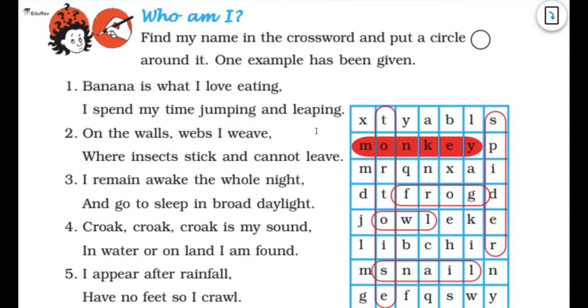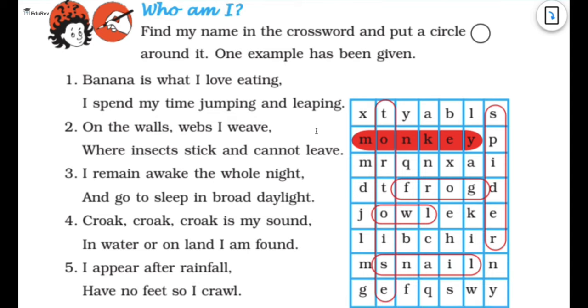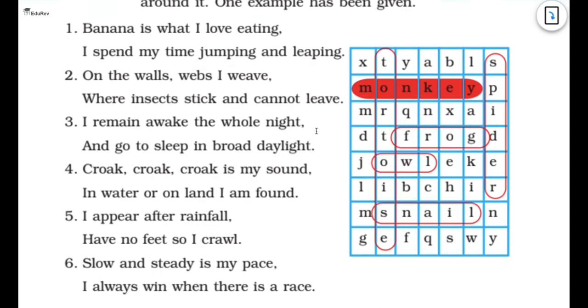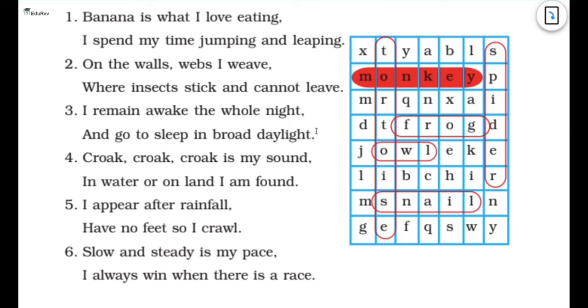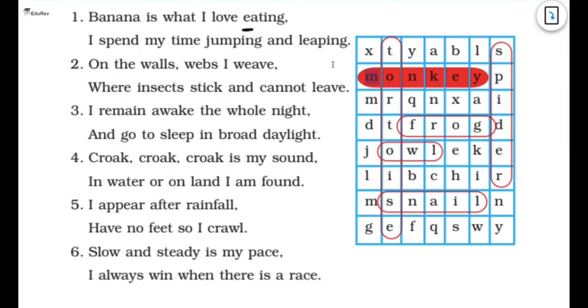Then it's who am I. Find my name with a crossword and put a circle around it. One has been done for you. So I am going to read it and tell you how to do it. The first one is banana is what I love eating. I spend my time jumping and leaping. So who is that? Monkey. So here we have monkey here.